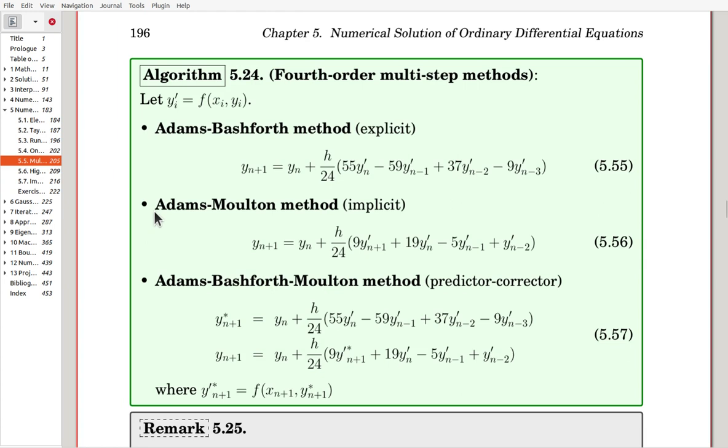For the second one, this is an implicit method. Here, Y_M+1 prime is the same as f at X_M+1 and Y_M+1. So that is implicitly defined. By using an iterative algorithm, you have to solve for Y_M+1. In that case, it may be a little bit expensive.